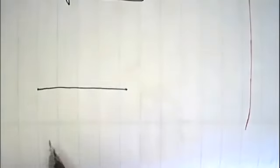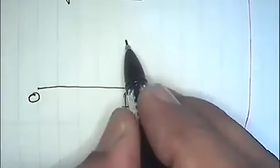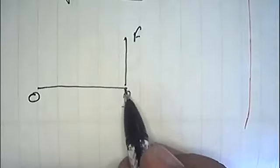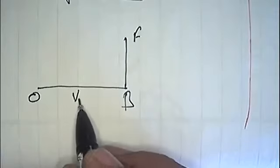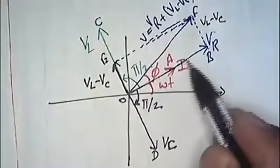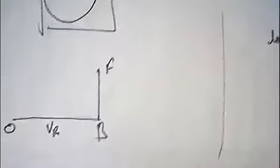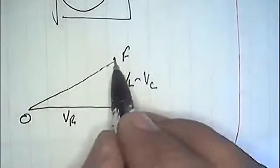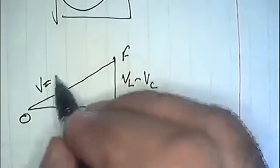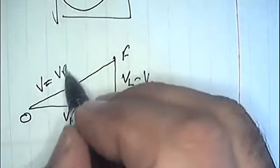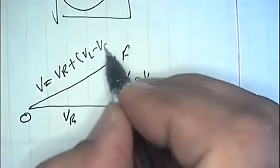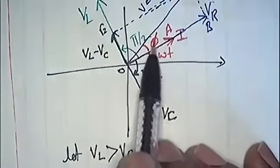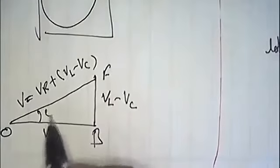I am going to draw here. The triangle over OB — OB is VR, and BF is VL minus VC. The resultant voltage V equals VR plus VL minus VC, and the angle between vector VR and OS is phi.